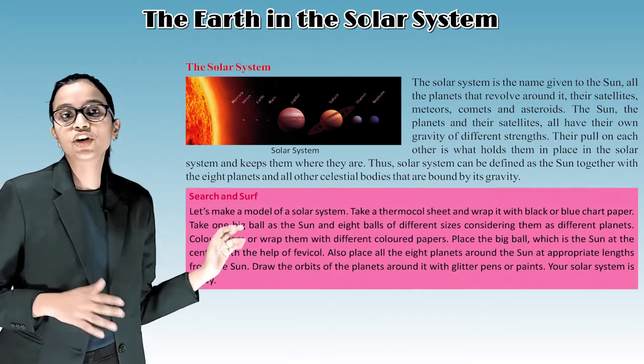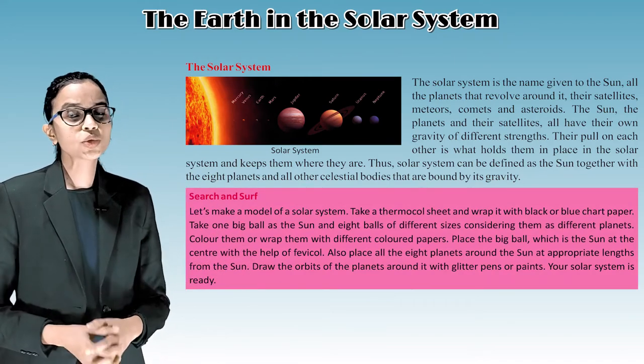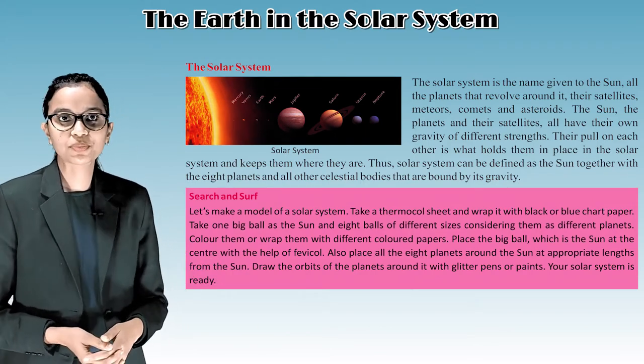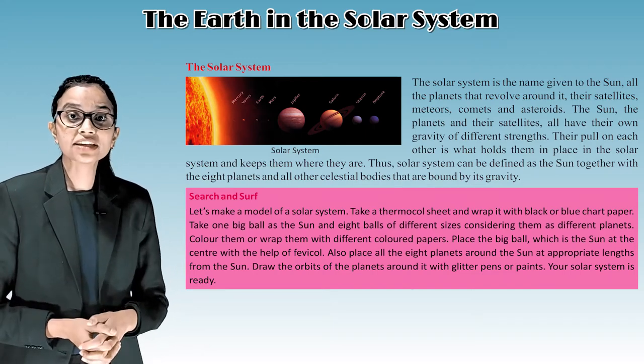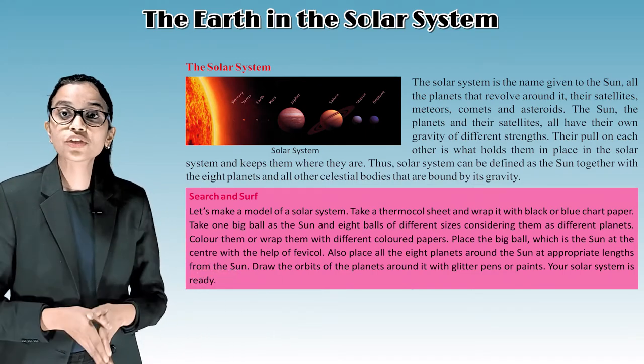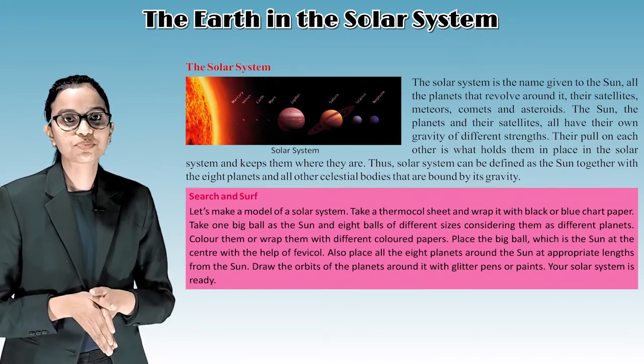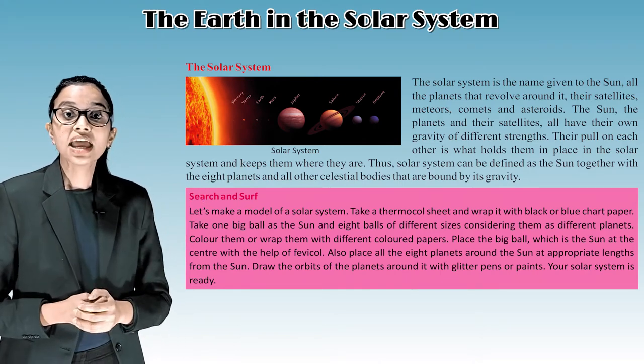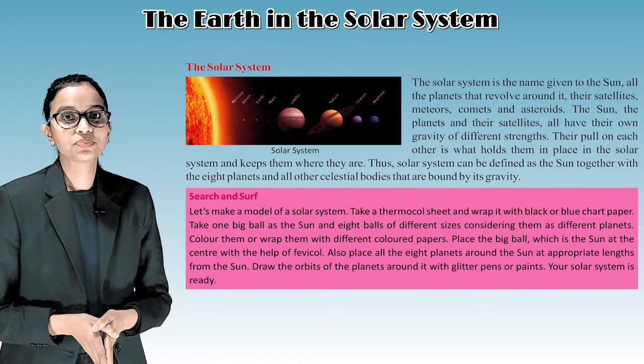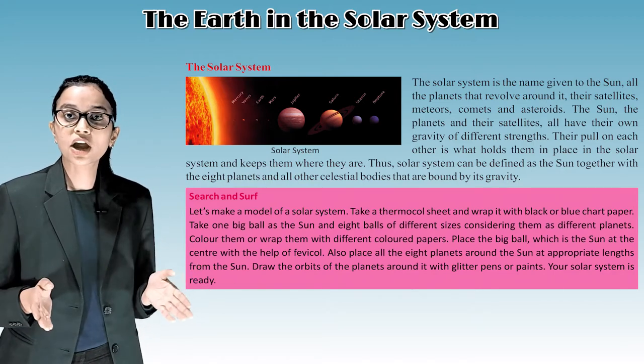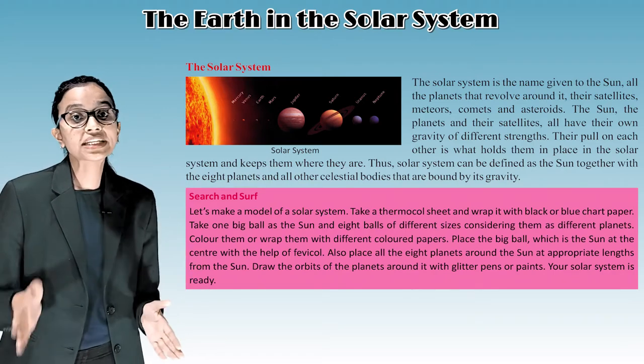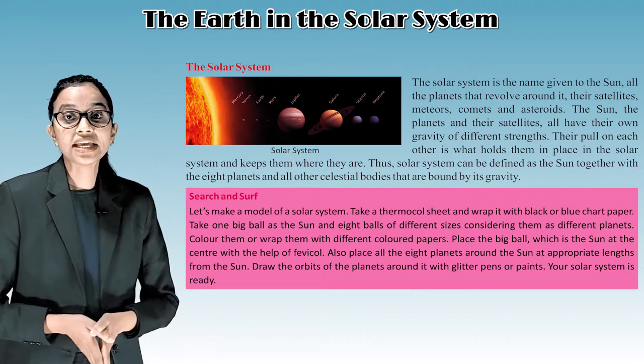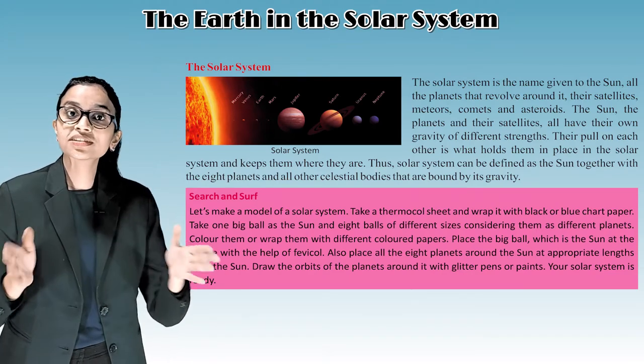Search and surf. Let's make a model of a solar system. Take a thermocol sheet and wrap it with black or blue chart paper. Take one big ball as the sun and eight balls of different sizes, considering them as different planets. Color them or wrap them with different colored papers. Place the big ball, which is the sun, at the center with the help of fevicol. Also, place all the eight planets around the sun at appropriate lengths from the sun. Draw the orbits of the planets around it with glitter, pens or paints. Your solar system is ready.